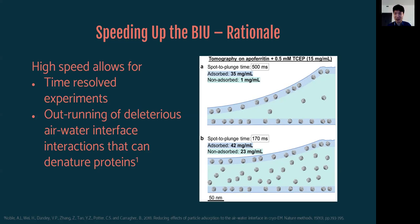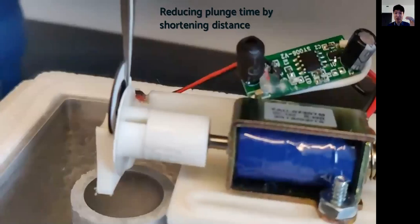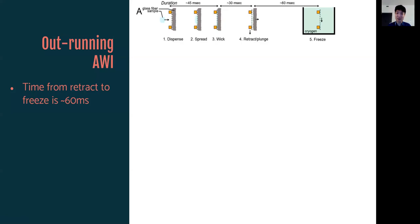So in order to test how fast we can speed up our device, we actually use a hemagglutinin trimer sample, which was also used in their paper. This sample actually adopts a preferred orientation view when it sticks to the air-water interface, so it's very telling. Only when it's not at air-water interface can you see side views of it. One way to reduce the plunge time is that we actually shorten the distance between the grid when the sample is applied as well as the cryogen, so that it has less distance to travel before it's plunged. Here you can see that. It only needs to plunge at a really short distance before it hits the cryogen, so it's as close as it gets.